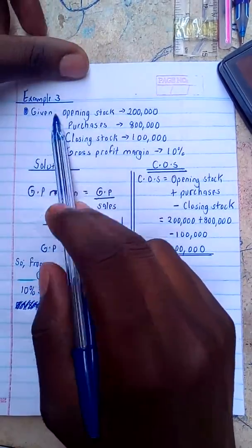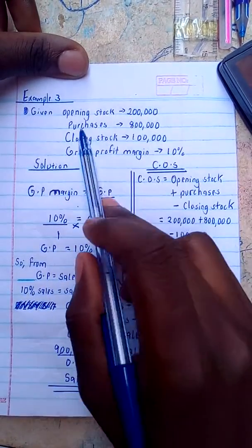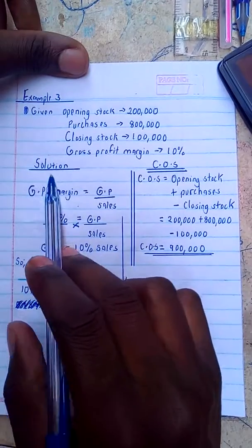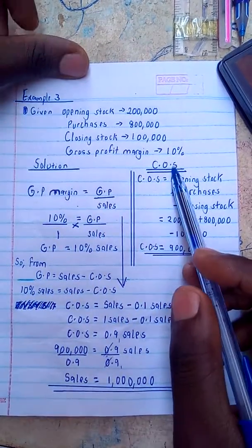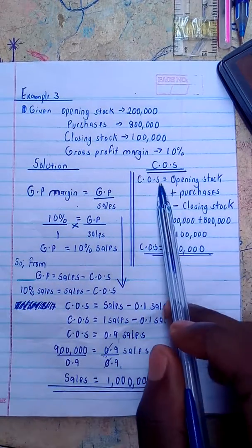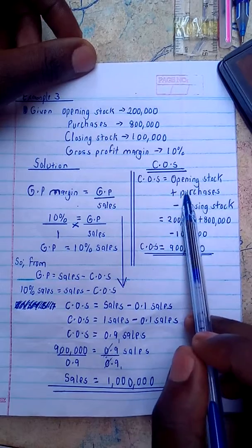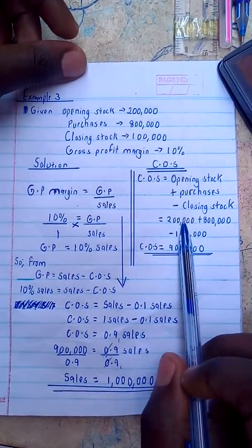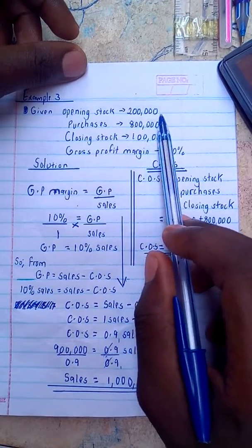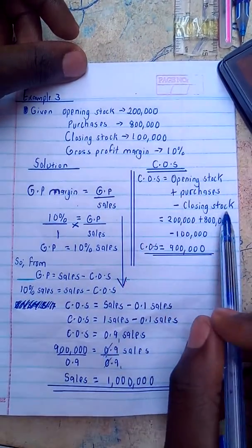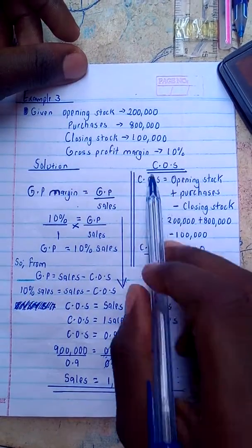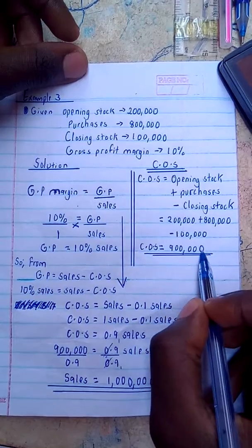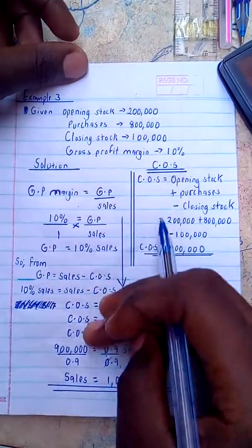Here is example three. Given: opening stock of this amount, purchases of this amount, closing stock of this amount, and a gross profit margin of 10%. In the solution, I first determine cost of sales: opening stock plus purchases minus closing stock — inserting 200,000, plus 800,000, minus 100,000 — giving a cost of sales equal to 900,000.